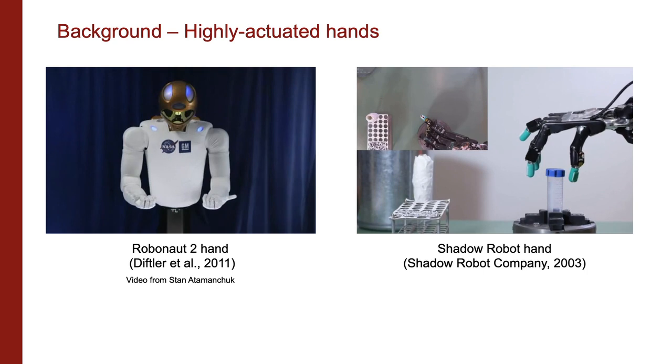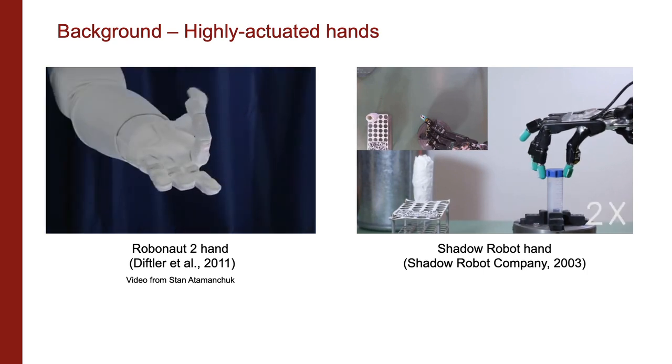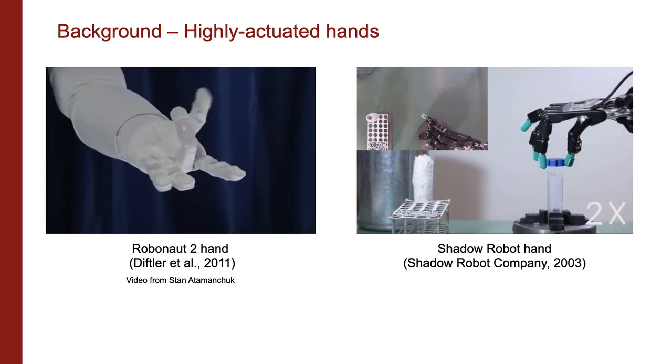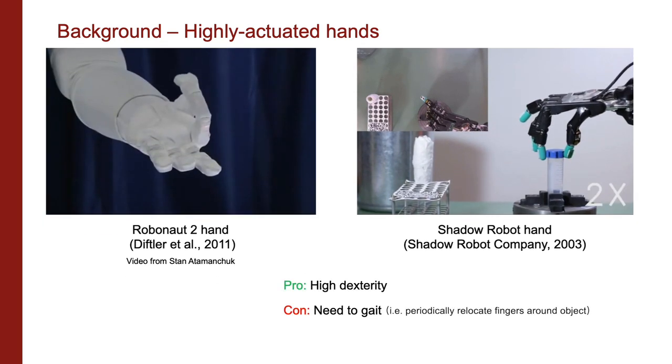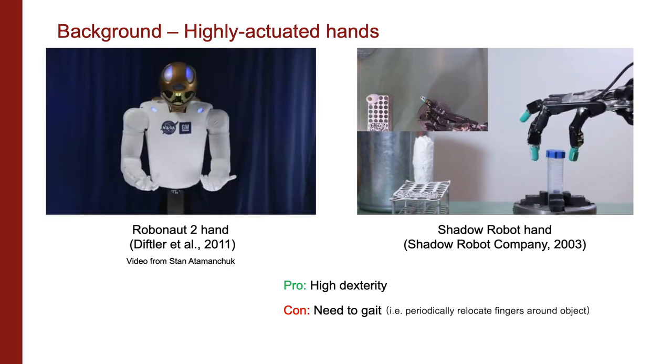Because the human hand possesses the dexterity to perform within hand manipulation, there have been lots of attempts to replicate this ability by replicating its structure. While mechanically capable, these highly actuated hands still need to gait in order to perform in hand manipulation.